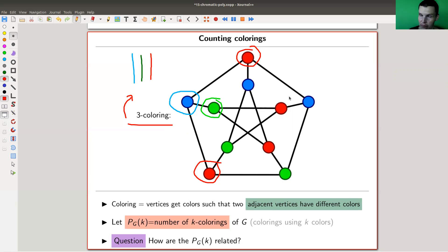And the PG(k), well, PG(k) is a number of k colorings. The zero coloring is a bit boring. A one coloring, let's think about one colorings. As soon as you have one edge, you can't have one coloring anymore,